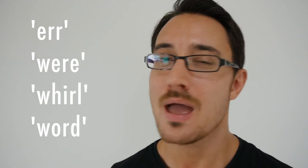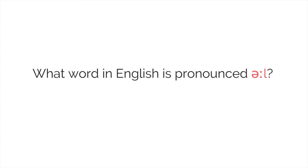So there you have it — this is how you pronounce 'world'. We've also talked about 'were', 'whirl', and 'word'. However, there's another word we haven't talked about. If we take away the W sound at the beginning and take away the D sound at the end, what word does that leave us? Leave a comment if you think you know the answer. Thanks for watching, take care, and remember to subscribe.